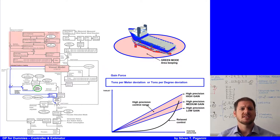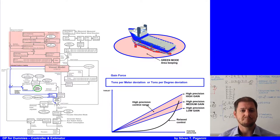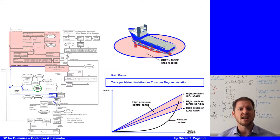Whichever DP control strategy is used to determine the gain factor, in the end there will always be a force in tons per meter offset in surge and sway, and tons per degree per meter offset for yaw. This system works very well as long as the vessel is more or less stationary.